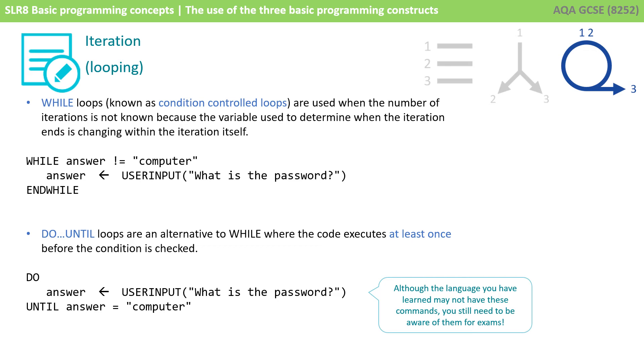Just carefully look at the difference. The top one says while answer is not equal to computer. Well, if the very first time you hit that line, it's not equal to computer, then you'll never run the code inside the while loop. So when the statement is checked at the top, the code has the possibility of never being run.